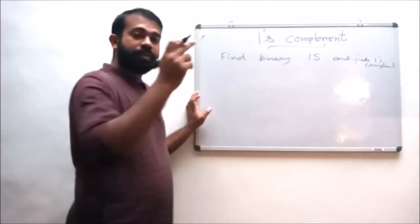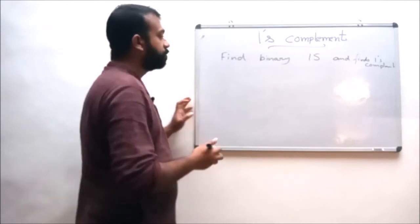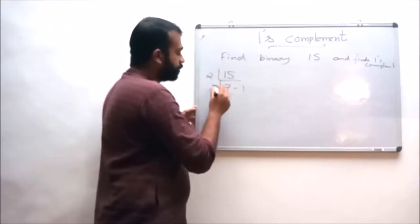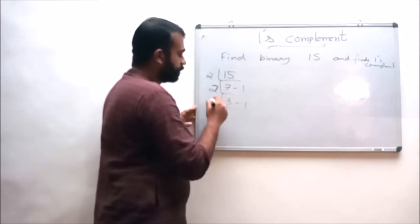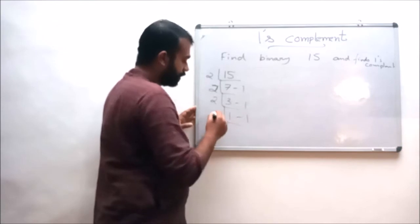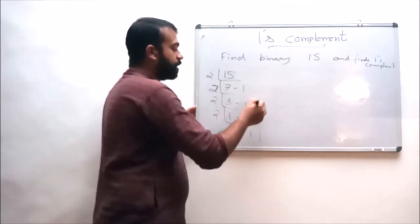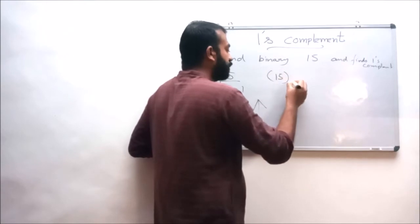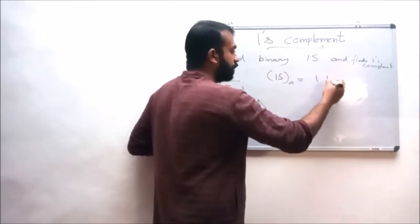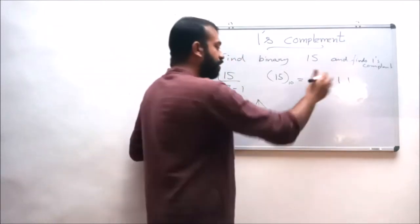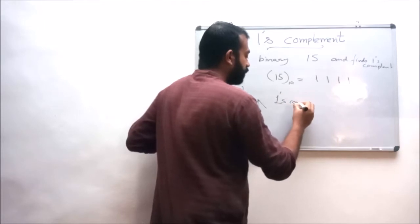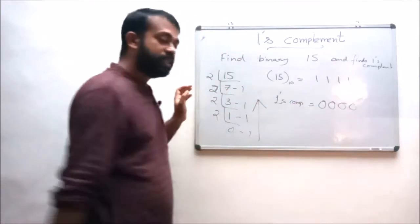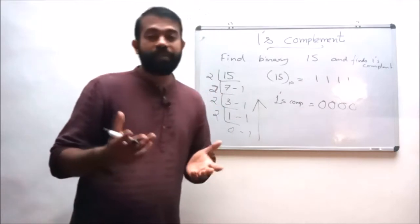First we have to convert the decimal number 15 into its binary number. That is: 15 divided by 2 results in 7 with a remainder of 1; 7 divided by 2 results in 3 with a remainder of 1; 3 divided by 2 results in 1 with a remainder of 1. So the binary equivalent of 15 is 1 1 1 1. The one's complement of this number is 0 0 0 0. This is how we find the one's complement of a number.